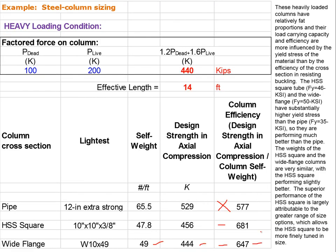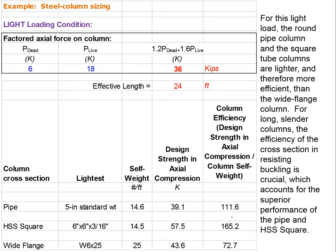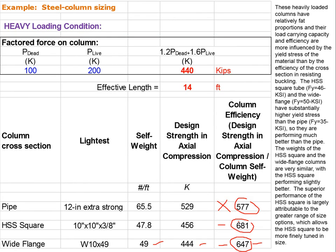Comparing the efficiencies, for heavy load cases we see values on the order of 500 to 700 — very large numbers. Previously for the lightly loaded condition, we had a best of 165 with 111 being more typical, because buckling was substantially undermining the capacity of the column to carry load. Still, it's remarkable that even a slender column vulnerable to buckling can carry 165 times its own self-weight, but that's nowhere near as good as 681 times its own self-weight.